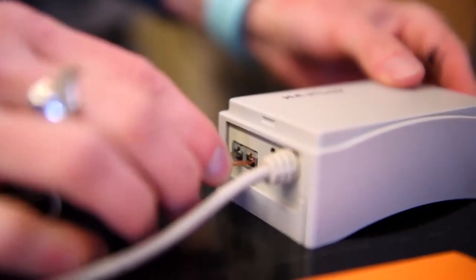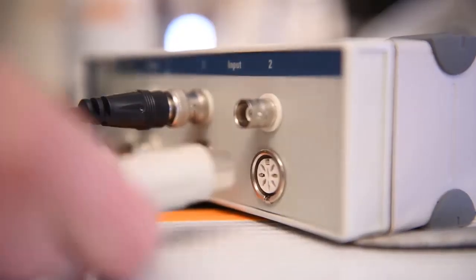Plug the thermistor into the T-type pod, then plug the T-type pod into the channel 2 port of the power lab data logger.